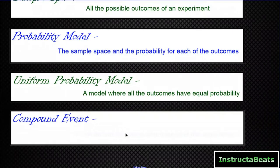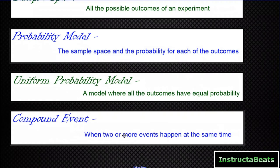A compound event is when two or more events are happening at the same time. Everything we've done up to this point in our lessons has been simple events — only one thing was happening. We were rolling one dice, or flipping one coin, or picking one marble out of the bag. A compound event is when two or more events are happening at the same time.